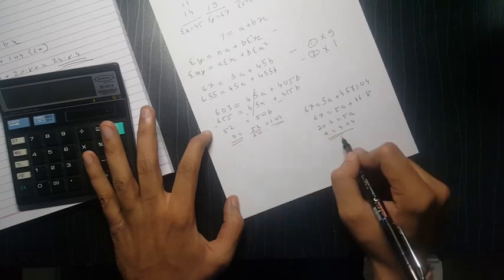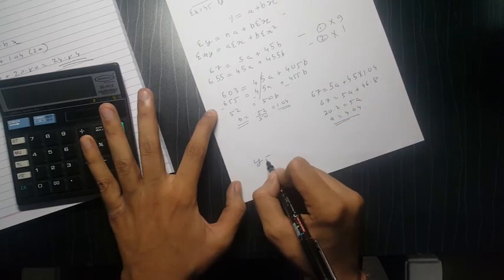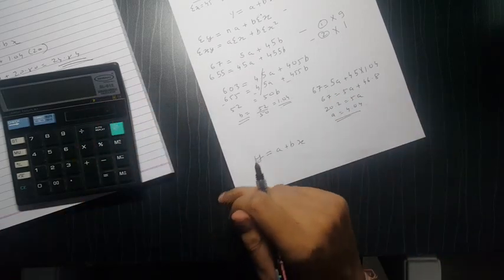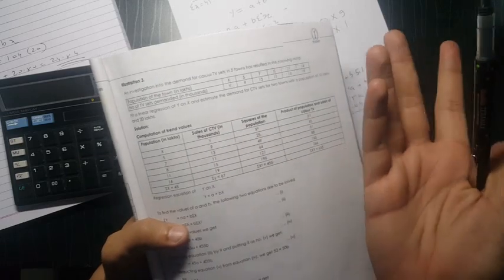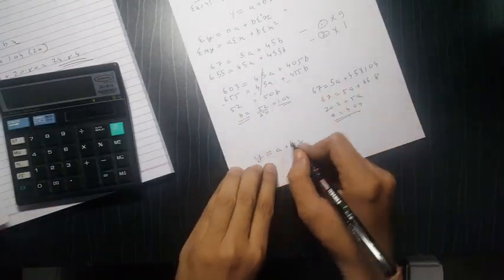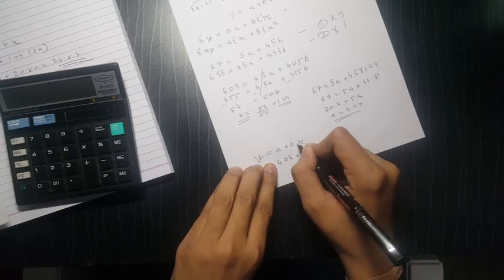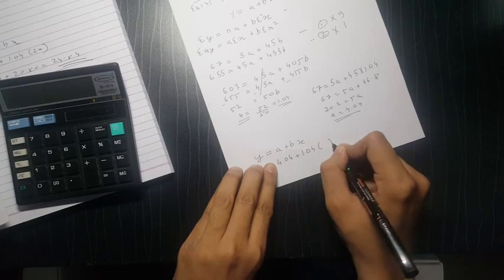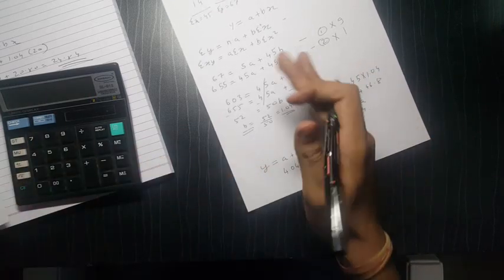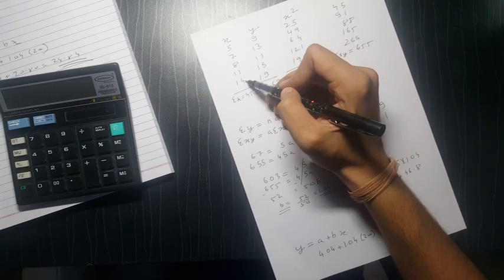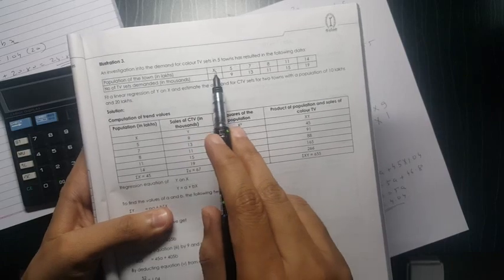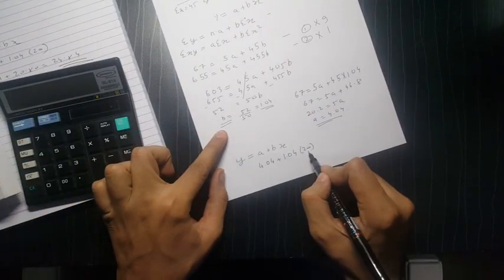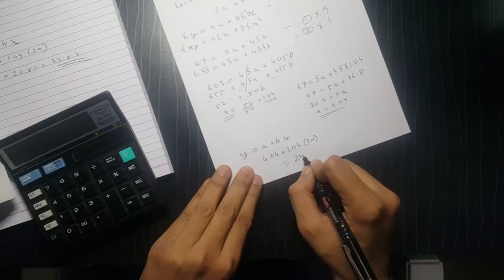So we have B amount, we have A amount. Now our equation Y is equal to A plus BX. Now tell us which year or what is 10 and 20 lakhs, 20 lakhs, 20. So what is A? A is 4.04 plus B is 1.04 into 20, X is 20, so it comes to 24.84.